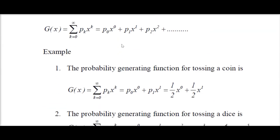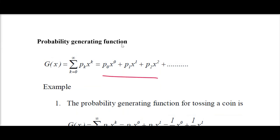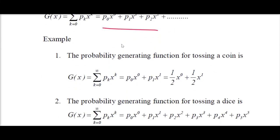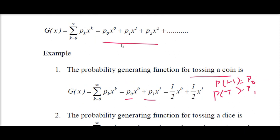The next function is the probability generating function. This is the general format of a probability generating function. As we know how to find the probability of each outcome — for example, tossing a coin gives two probabilities: probability of heads and probability of tails. You take one as p0 and the other as p1. So p0 and p1 are your probabilities, and the function depends on x0, x1, x2, where xk and pk are your probability values.